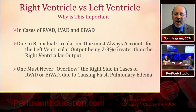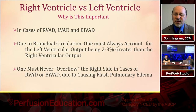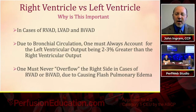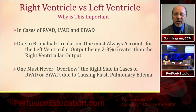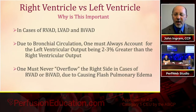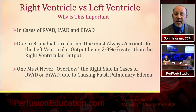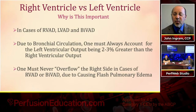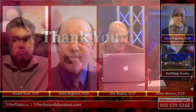Why is this important? In cases of managing an RVAD, LVAD, or BIVAD, due to the bronchial circulation, one must always account for the left ventricular output being 2–3% greater than the right. If you have a BIVAD running two separate pumps, one must never overflow the right side, because the left should always be flowing a little more. If the right side is flowing the same or more, you could cause flash pulmonary edema, which we have seen.